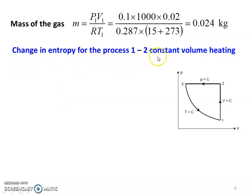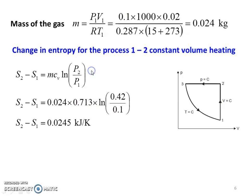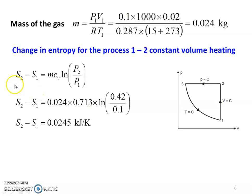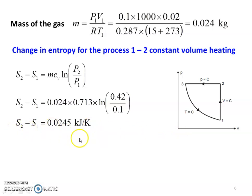Change in entropy for process 1 to 2, constant volume heating: S2 minus S1 equals M·Cv·ln(P2/P1). Substituting: 0.024 into 0.713 into ln(0.42/0.1) equals 0.0245 kilojoules per Kelvin. The change in entropy is positive, as expected for a heating process.